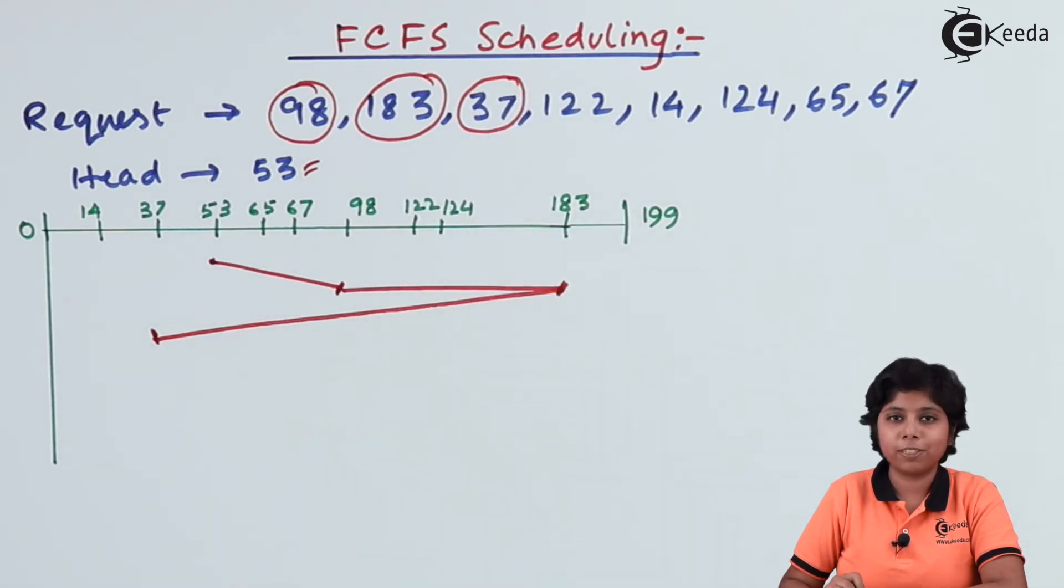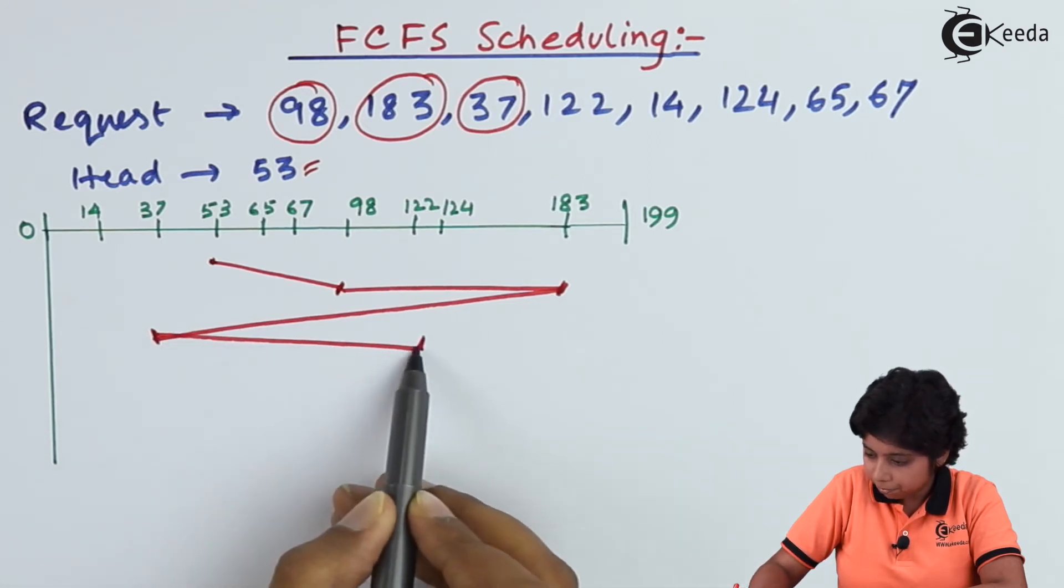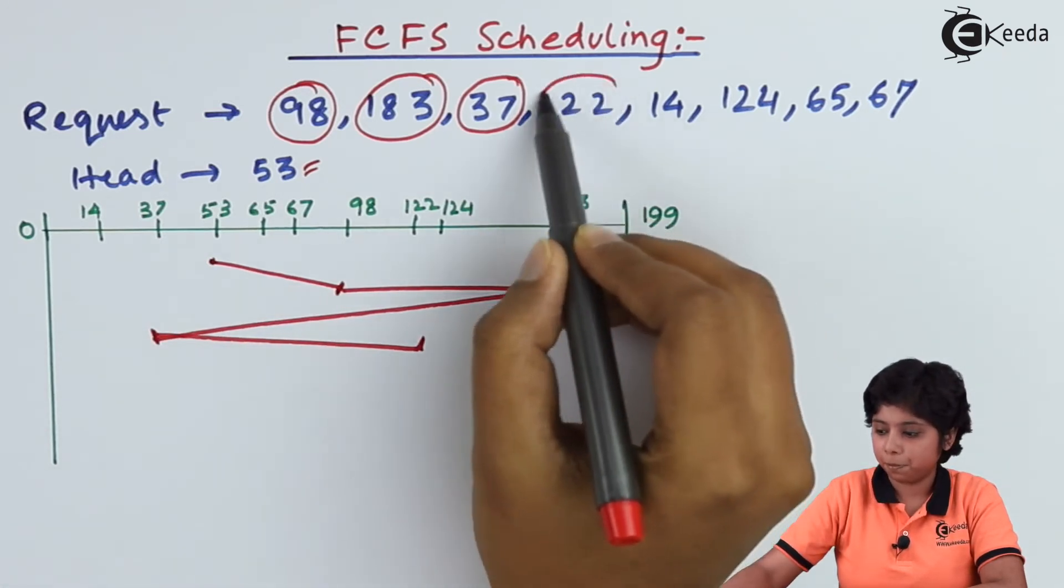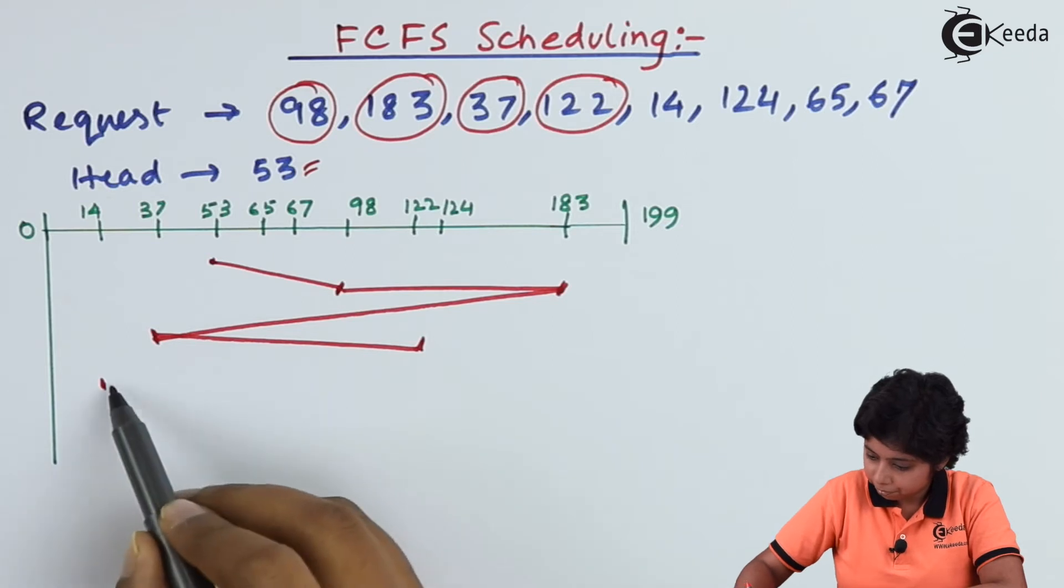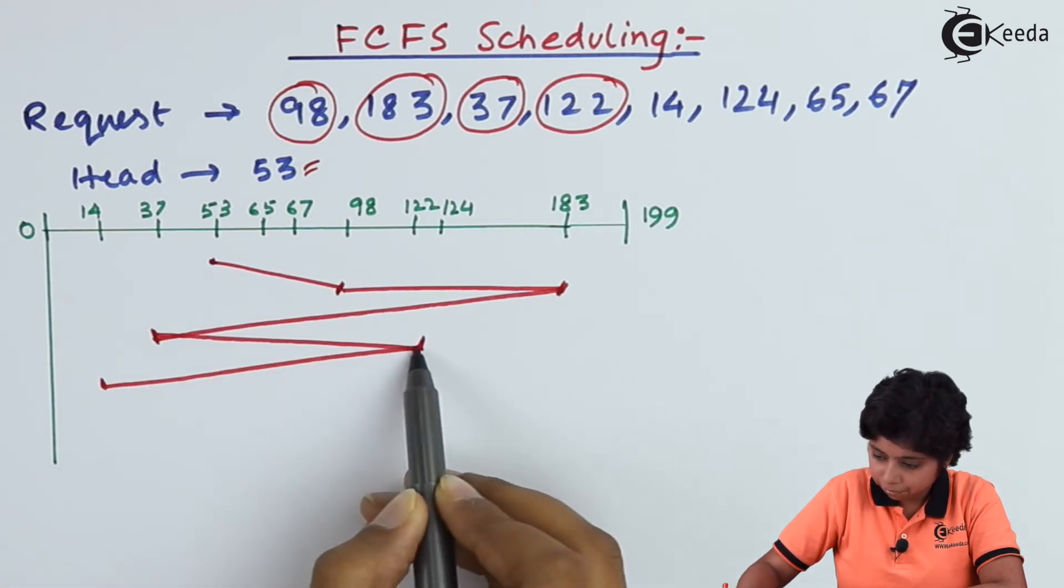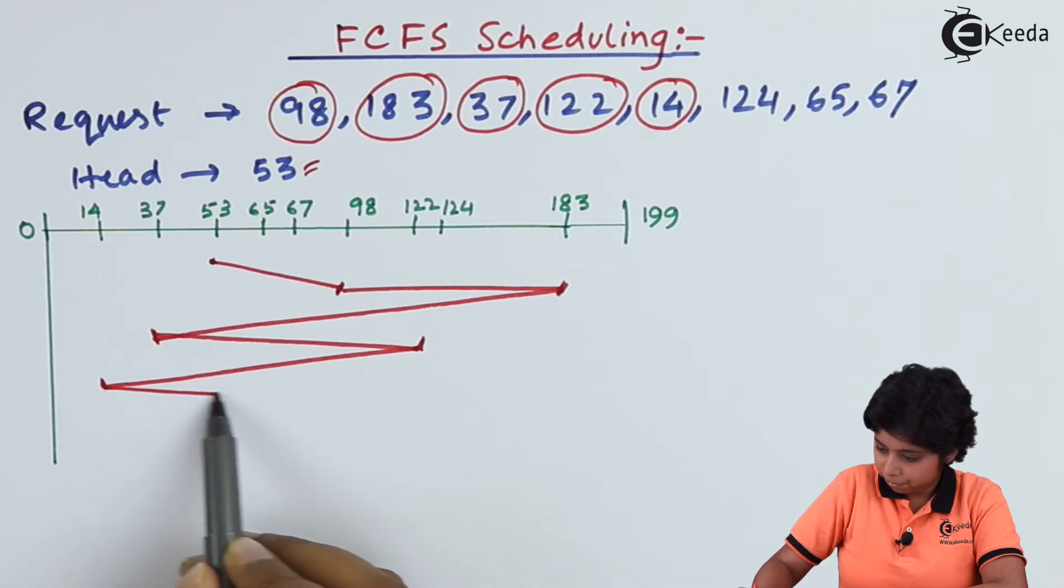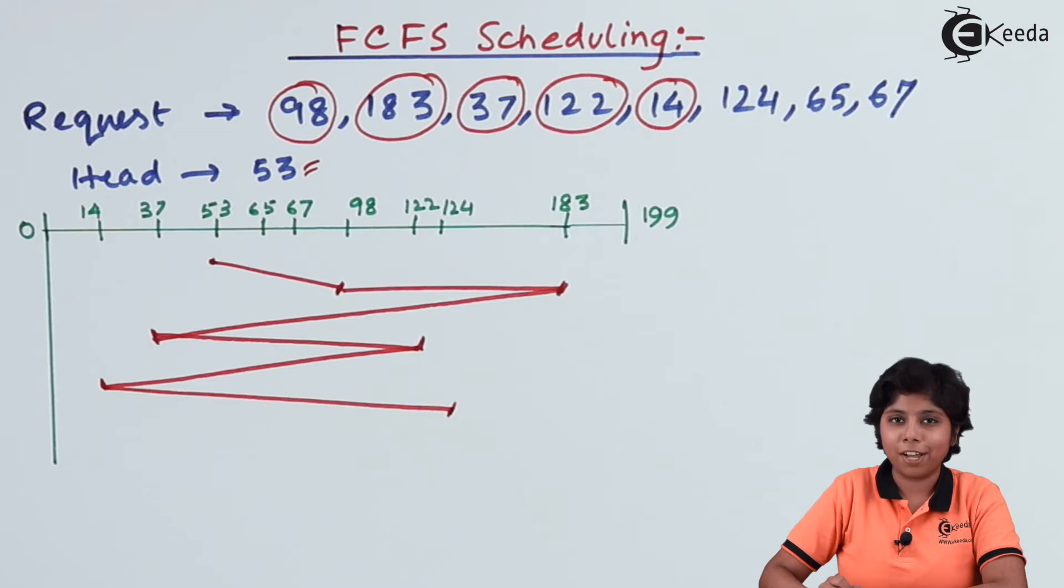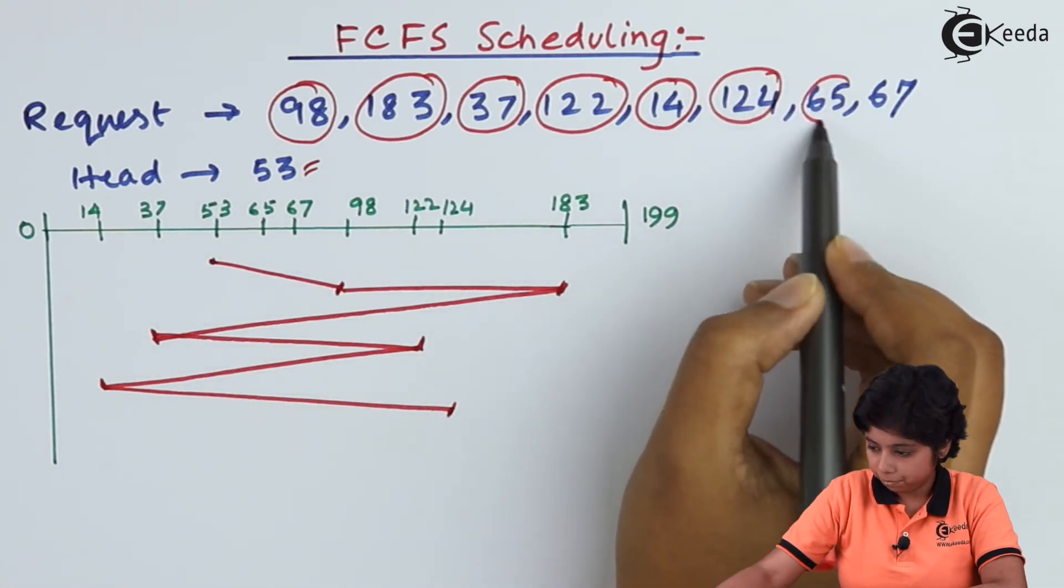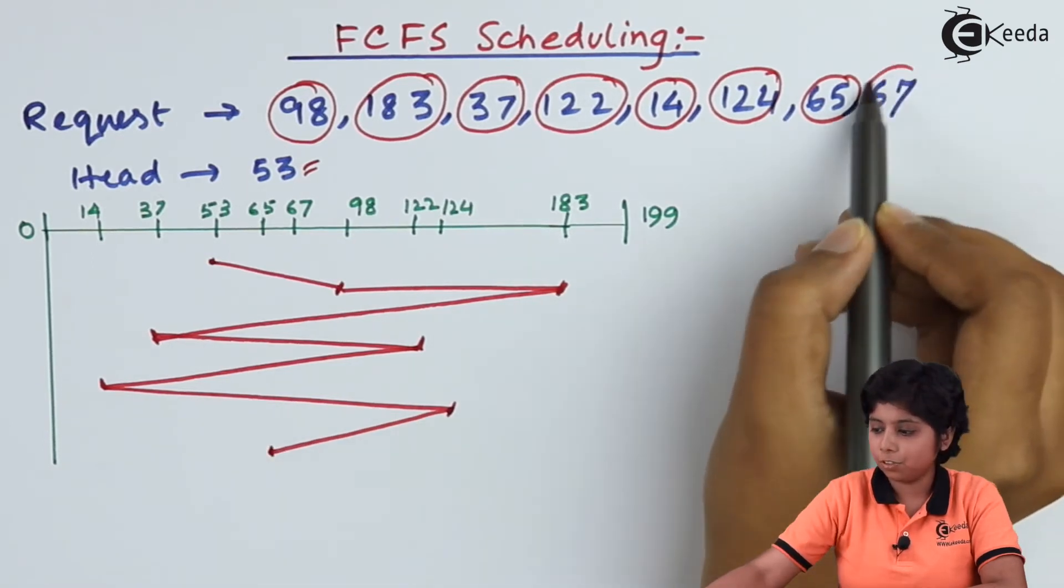Next to 122. Next to 14. Now to 124. Now to 65. And at last to 67.